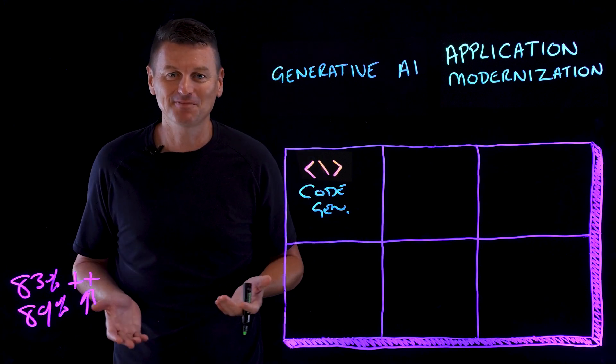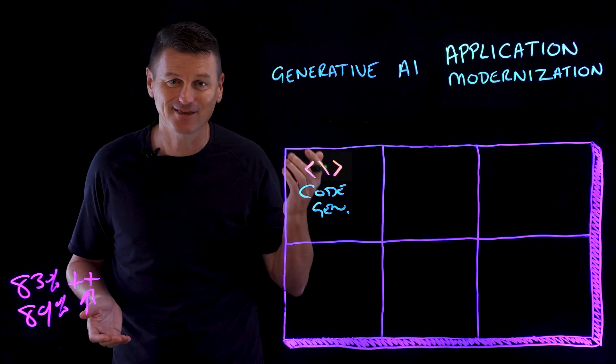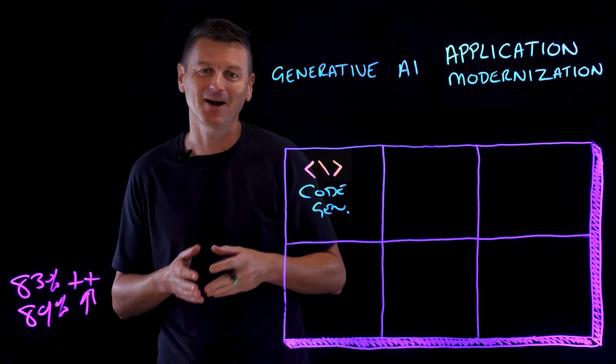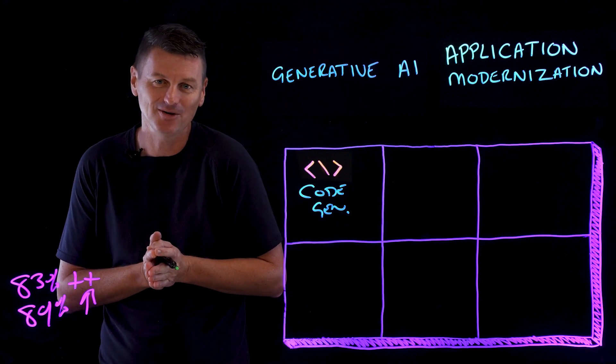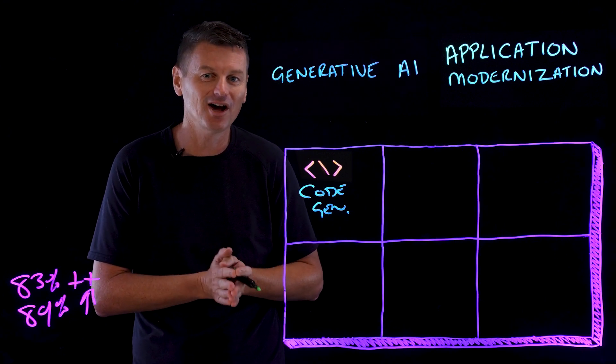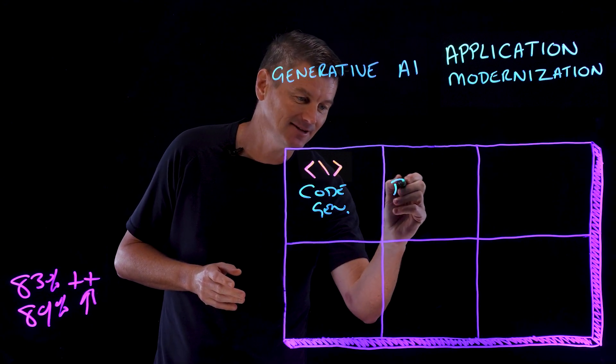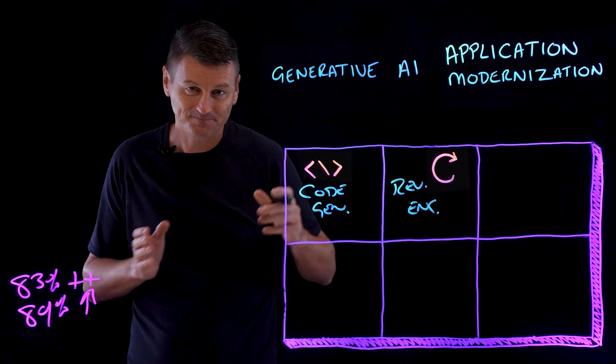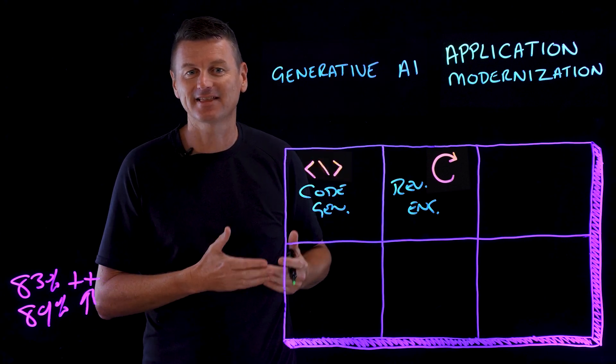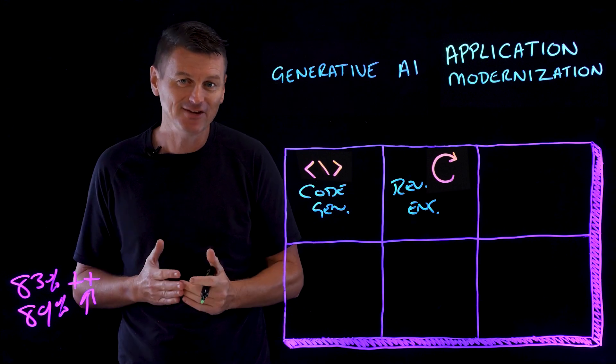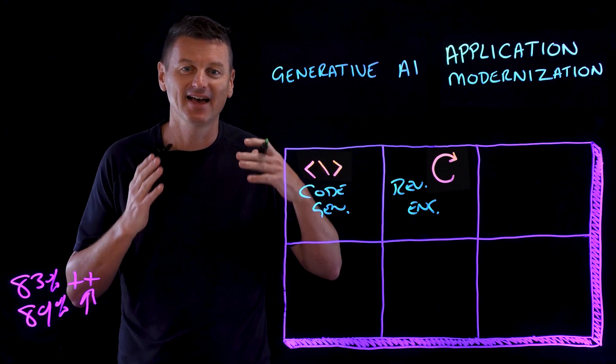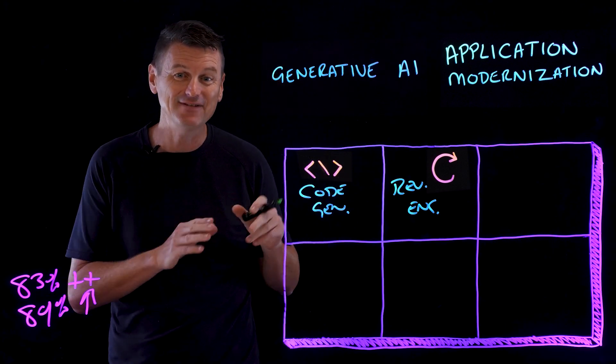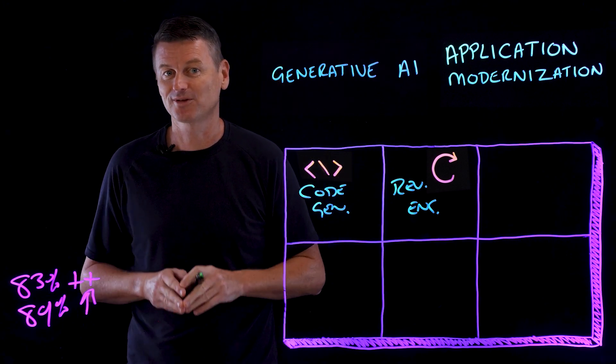Now, next, have you ever looked at an ancient piece of software, scratched your head and thought, what in the world does this do? I have. In my first professional job, I was working with cable billing code written in RPG that was older than I was. Enter reverse engineering. With its ability to analyze and understand code structures and their behaviors, generative AI assists in recreating or modernizing the existing systems and applications, even if the original source code is lost.